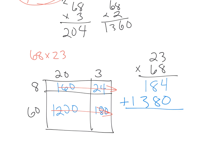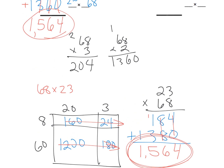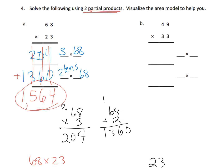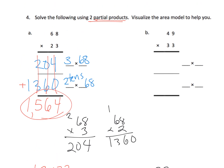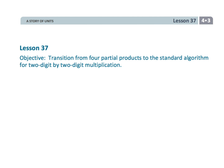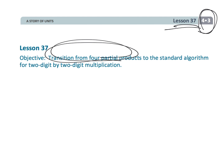Adding those together: 4 and 0 is 4, 8 and 8 is 16 — carry the 1 — then 1 plus 1 plus 3 is 5, and then 1, giving 1,564. That's exactly the answer we got using the two partial products method. You can use either approach — two partial products or four partial products using the area model. That wraps up fourth grade module 3 lesson 37, transitioning from the four partial product area model to the standard algorithm.